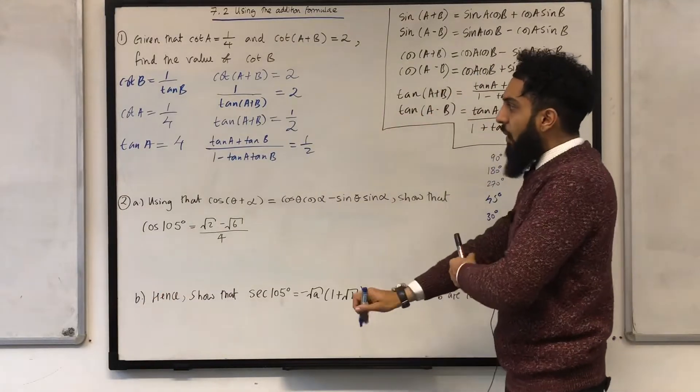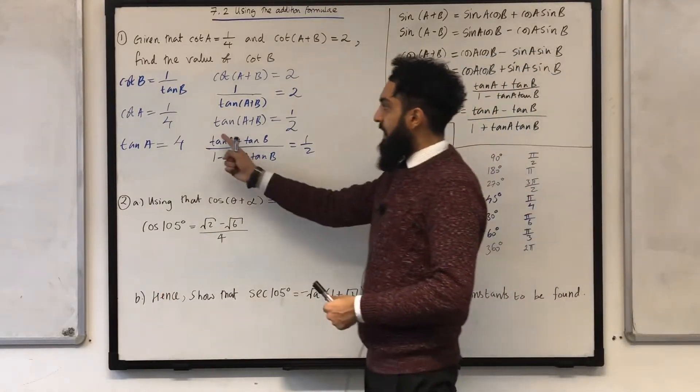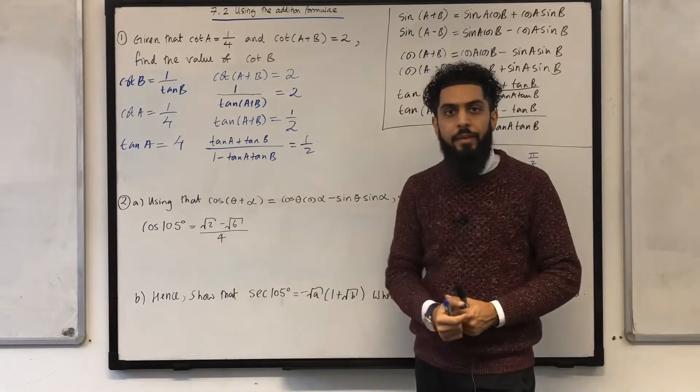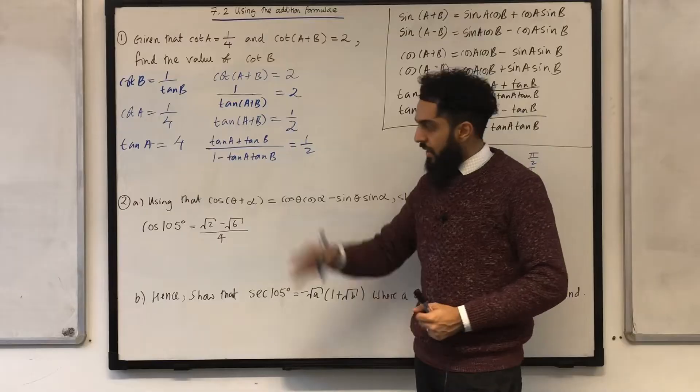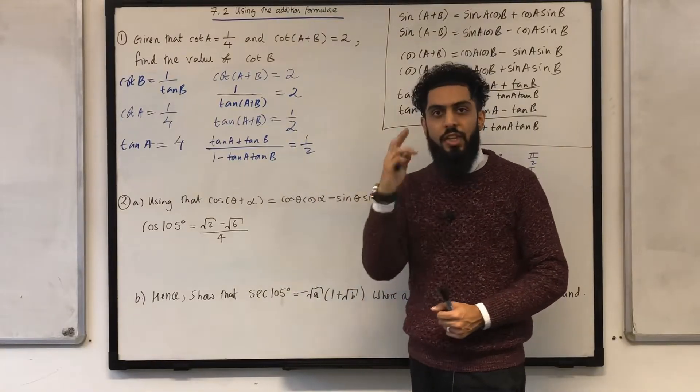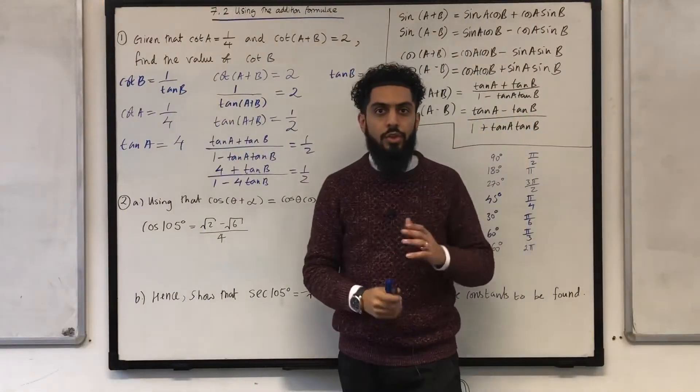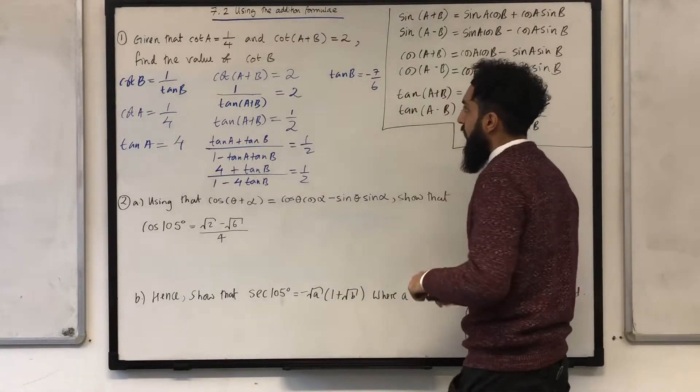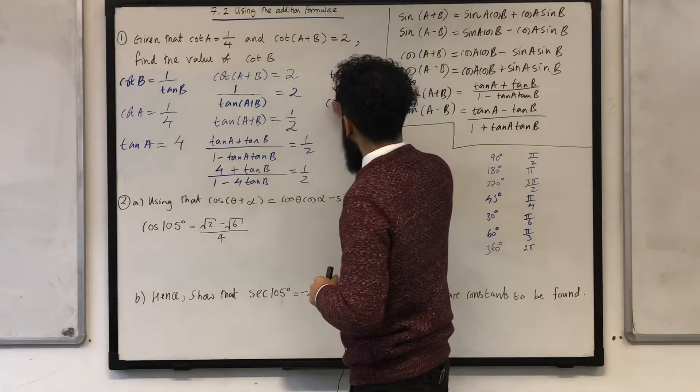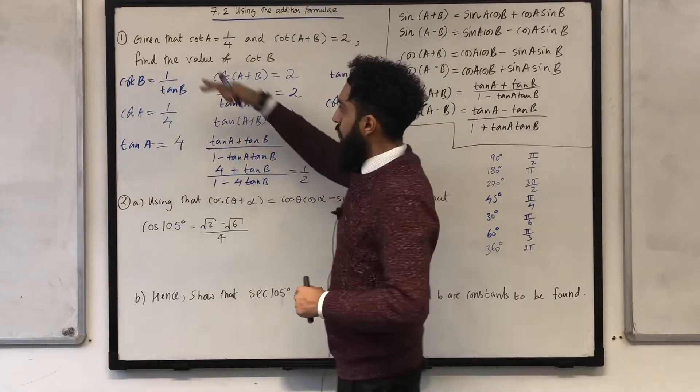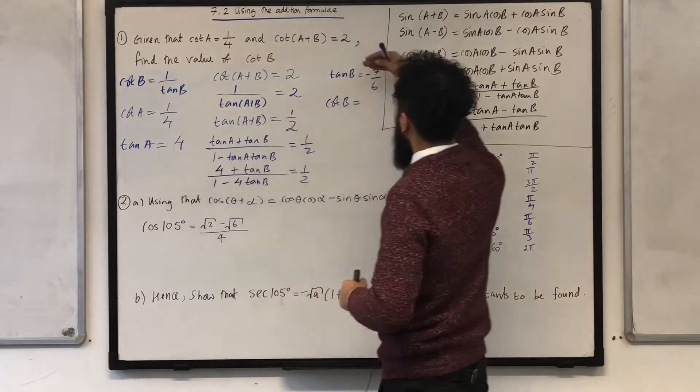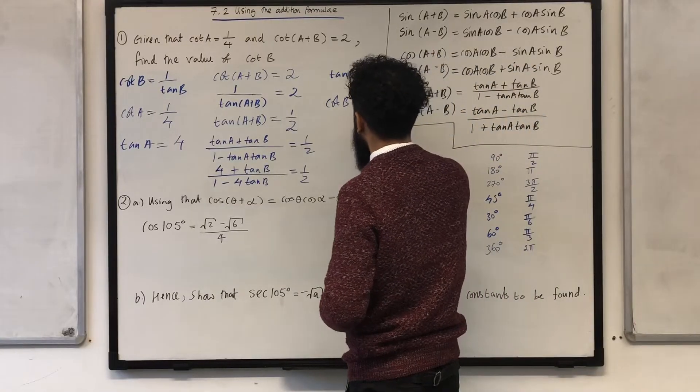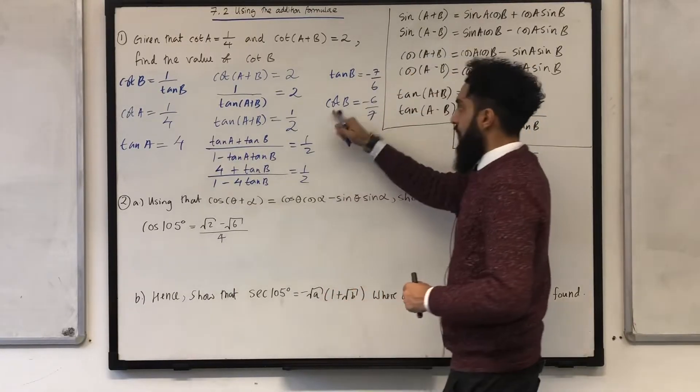So, I would like you all to replace the tan a's with 4 and then rearrange to work out tan b. Once you finish that, the answer will come up on the board and you can check your work. Okay, so, you should all end up with tan b equal minus 7 over 6. Hence, I know what cot b is. It's just 1 over tan b. So, 1 over minus 7 over 6 is just minus 6 over 7. And that there is the value of cot b.